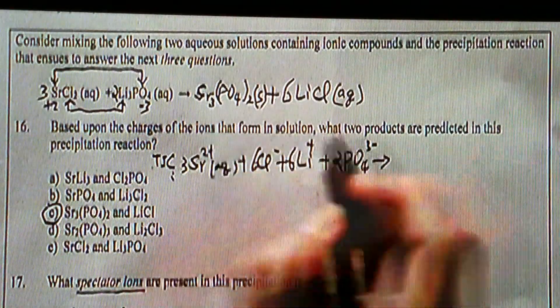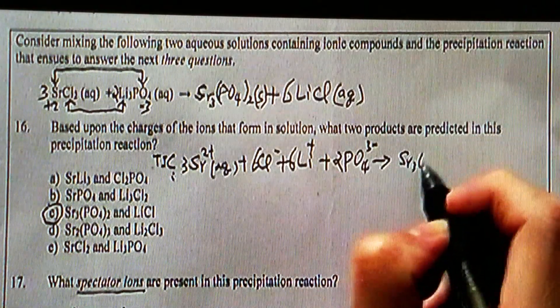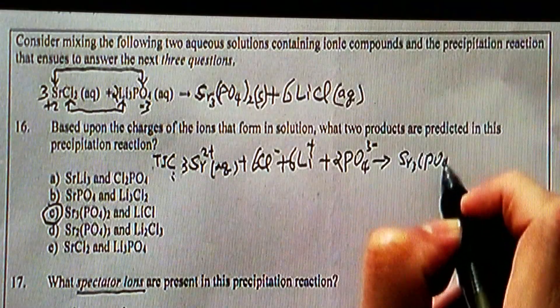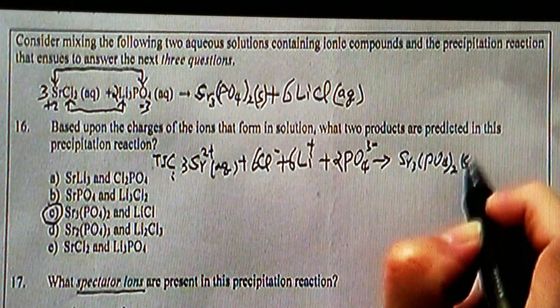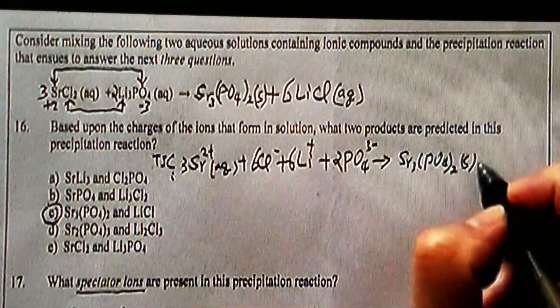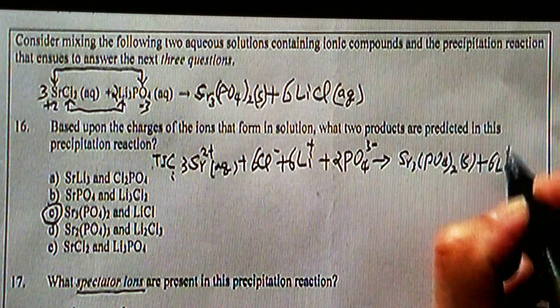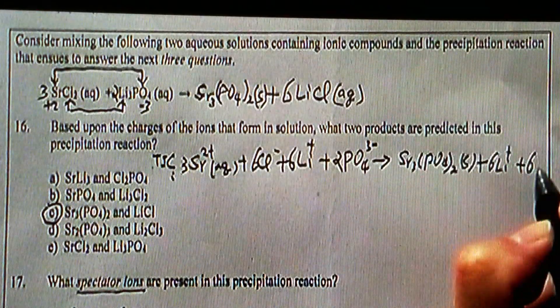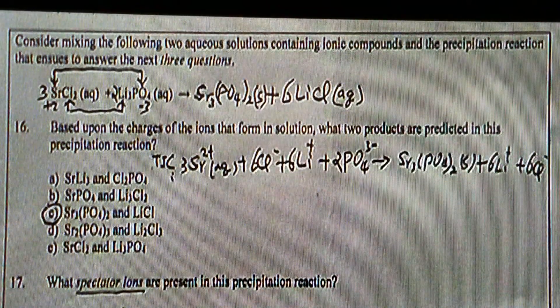On the right-hand side, we can't break this precipitate into ions. Why? Because it's a solid, and it stays in solution as a solid, as a precipitate. Then we have six lithium ion, six chloride ion.